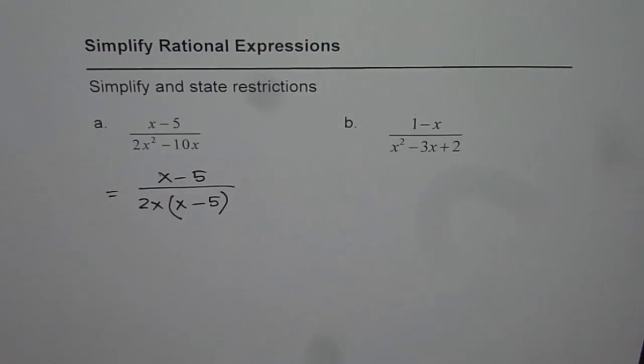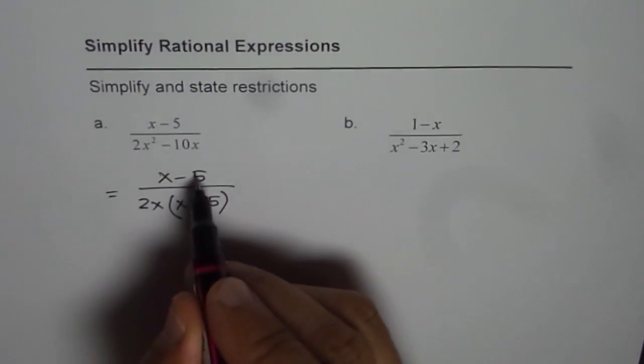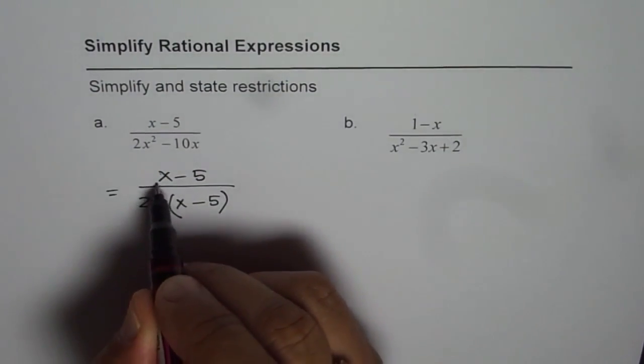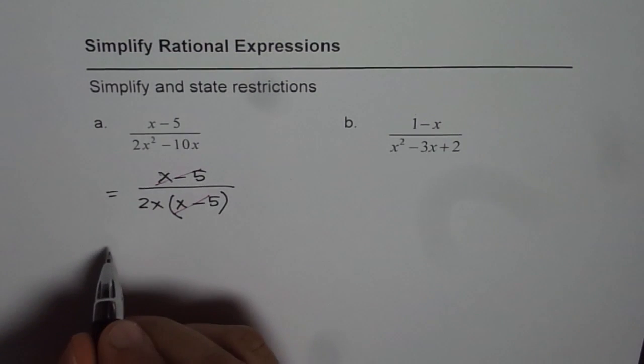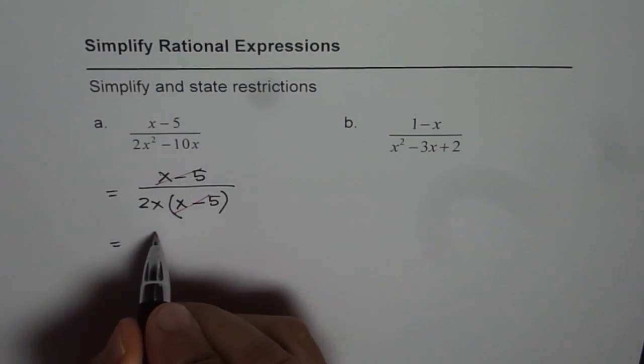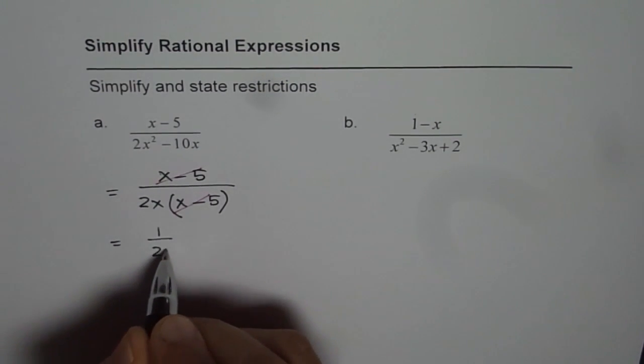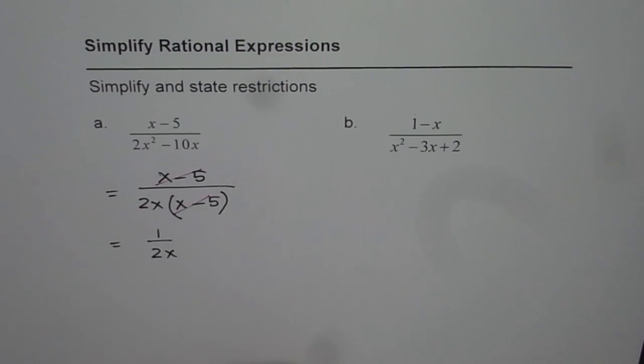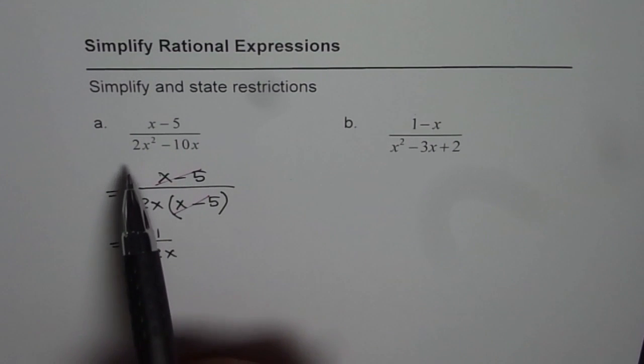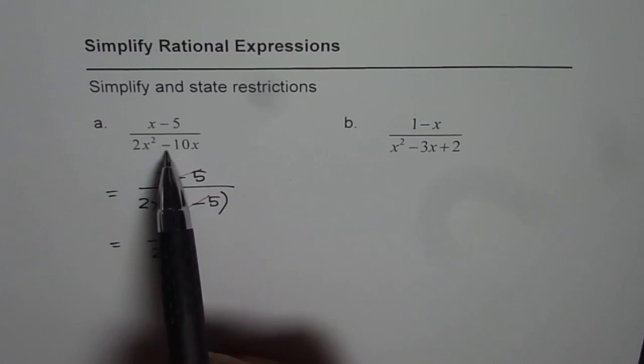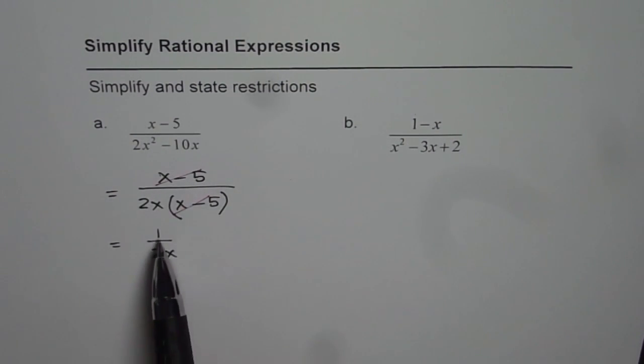Now, as you can see, when we simplify, x minus 5 and x minus 5 are common factors—they cancel out. So we can write our simplified expression as 1 over 2x. Now, the question is, is the expression x minus 5 divided by 2x squared minus 10x equal to 1 over 2x? Think about it.